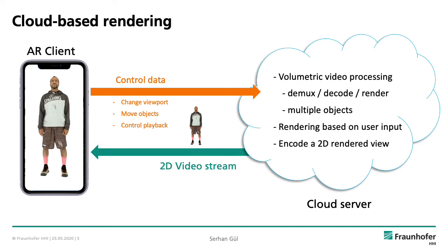Let's look into how cloud-based rendering works. As shown in the diagram, we have an AR client — shown here as a smartphone, but typically it's AR glasses like Microsoft HoloLens. Based on user interaction, such as changing the viewport, moving virtual objects, or controlling playback, the AR client sends control data to the cloud server, which then performs processing of the volumetric video: demultiplexing the MP4 file, decoding the individual data streams, and rendering them for multiple objects across different video streams. The rendering is controlled based on user input, the 2D rendered view is encoded and streamed to the AR client, and this 2D view is dynamically updated based on user interaction.